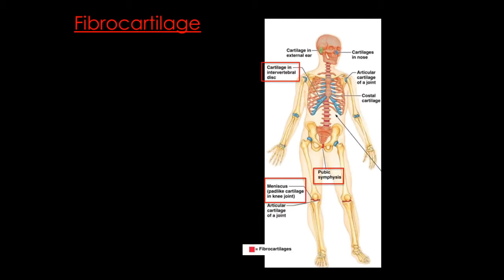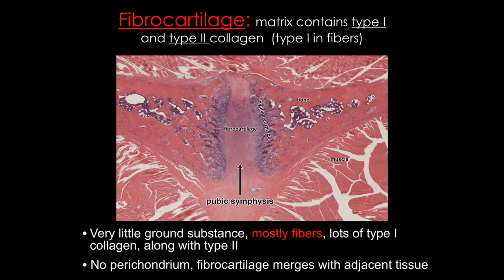Last but not least, we'll look at fibrocartilage. This is found in the pubic symphysis, the intervertebral disc, and the meniscus of some joints. Unlike hyaline cartilage, fibrocartilage — as its name suggests — is mostly fibers. It has very little ECM and the fewest number of chondrocytes. These chondrocytes secrete a large amount of type 1 collagen in addition to the type 2 found in all cartilages. Because of the ability of collagen 1 to form fibers, this cartilage has a ropier appearance. Fibrocartilage largely lacks a perichondrium but is usually found next to a dense connective tissue or a hyaline cartilage.